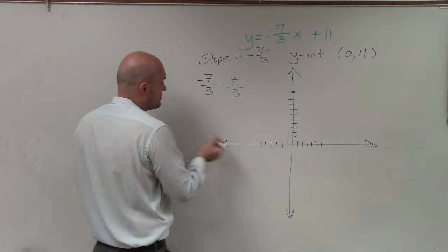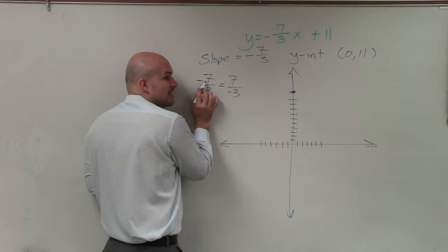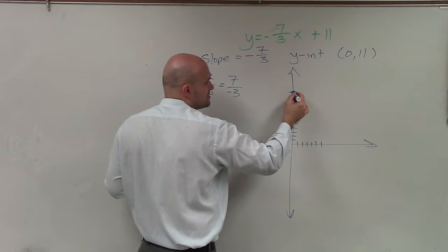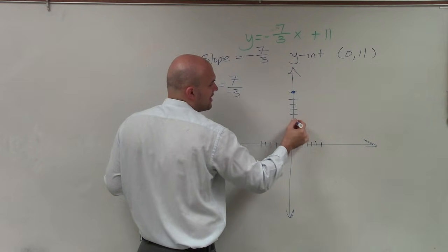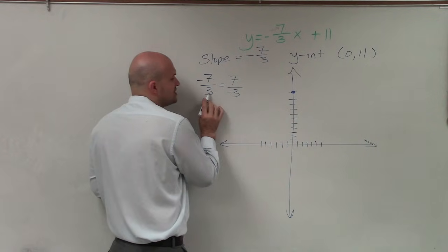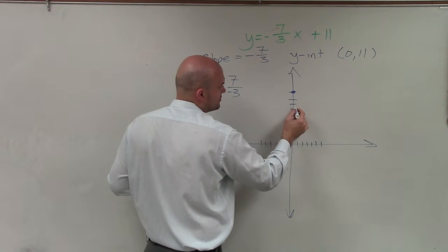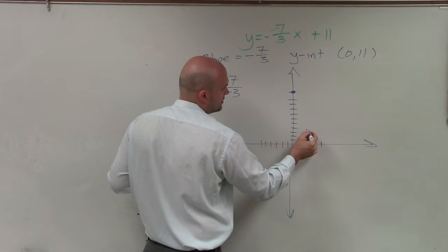It's the same thing. So now I'm just going to go my change in y is negative 7. So I'll go down 7. 1, 2, 3, 4, 5, 6, 7. And then my change in x is positive 3. So 1, 2, 3, 4, 5, 6, 7 over 3. 1, 2, 3.